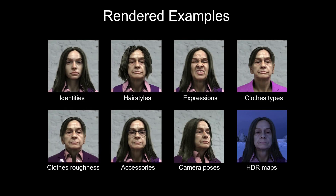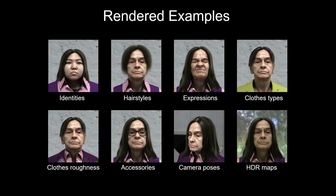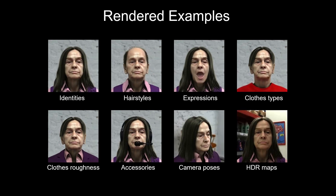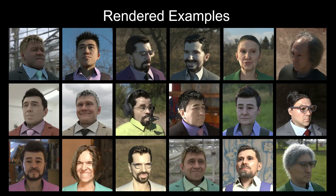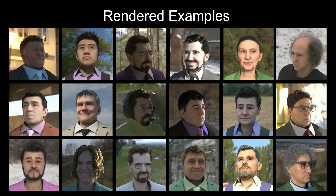Here are some examples of our rendered images where we only change one attribute at a time. Here we show more examples of the same person under different lightings.